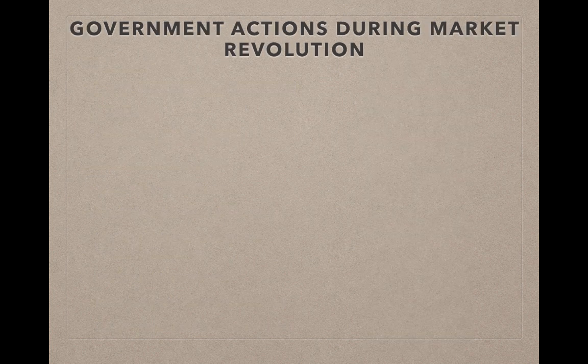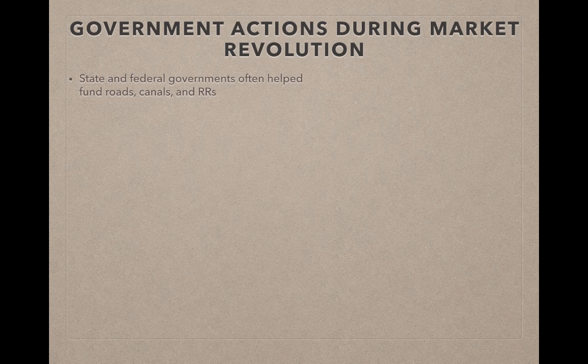Some government actions during the market revolution: state and federal governments would often help fund roads, canals, and railroads, but it mattered what type it was and where the funding came from. The Erie Canal was paid entirely by New York State because it is solely in New York State — that is an example of intrastate trade, meaning within a state. If a construction project only benefits one state, oftentimes that state would pay for it. If it benefited multiple states, it would be paid by the federal government.